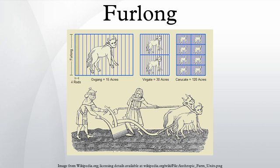The acre went from thirty-six thousand old square feet to forty-three thousand five hundred sixty new square feet, or from four thousand old square yards to four thousand eight hundred forty new square yards. The furlong was historically viewed as being equivalent to the Roman stadium, which in turn derived from the Greek system.